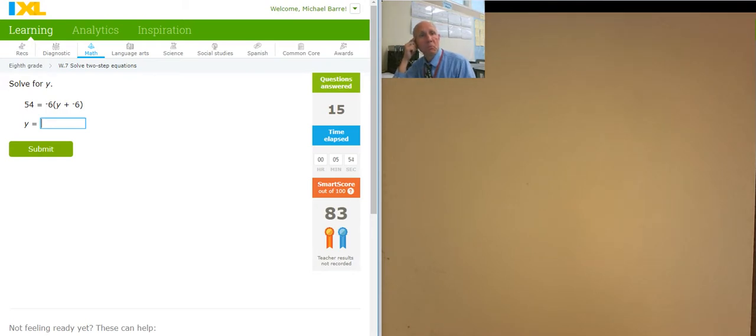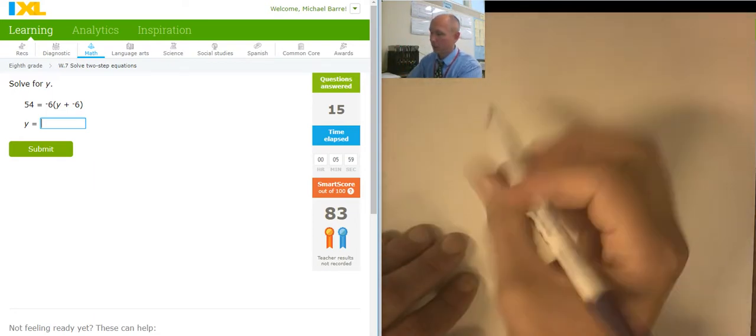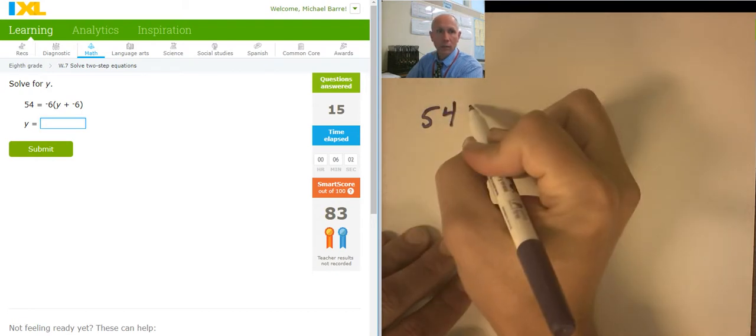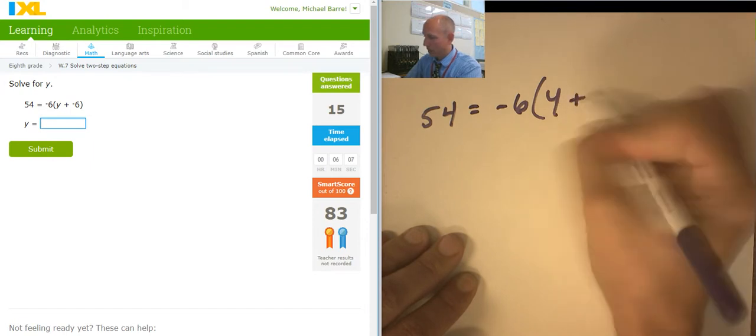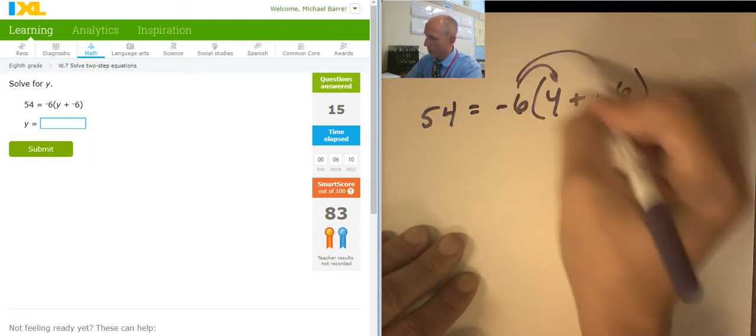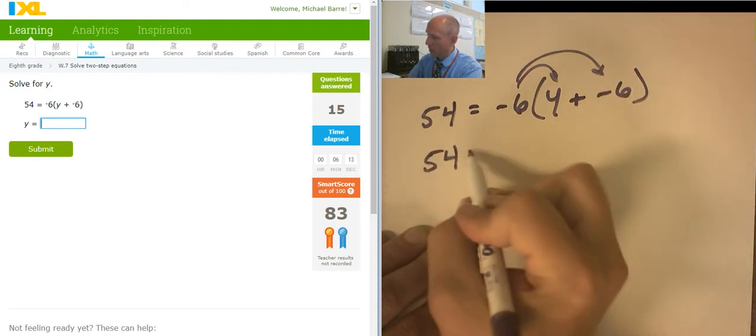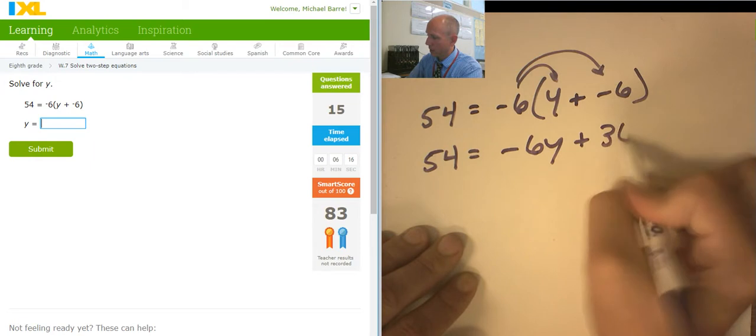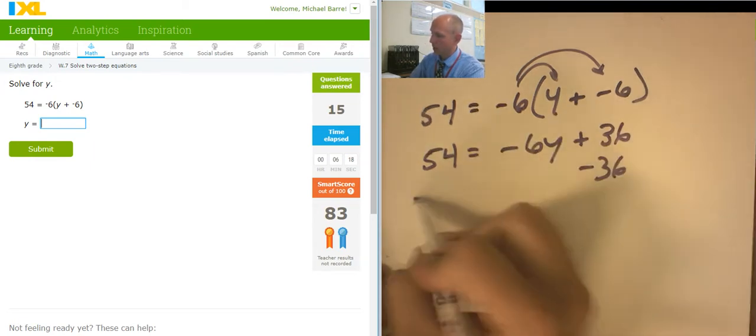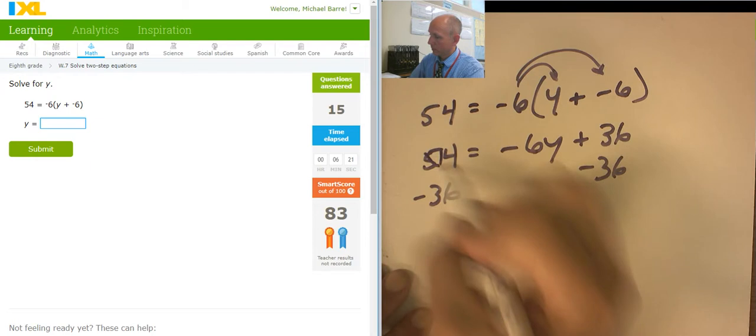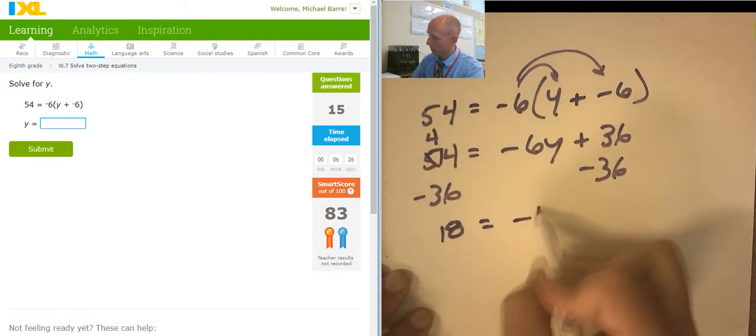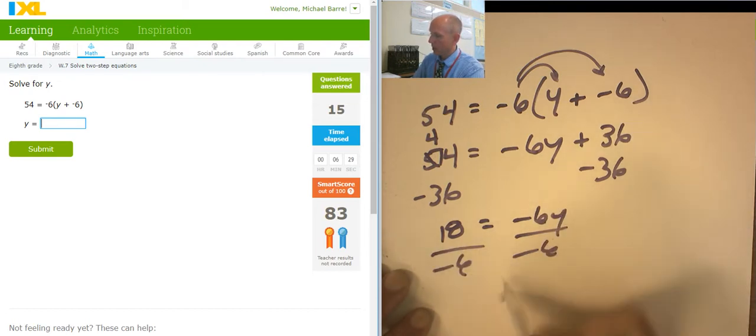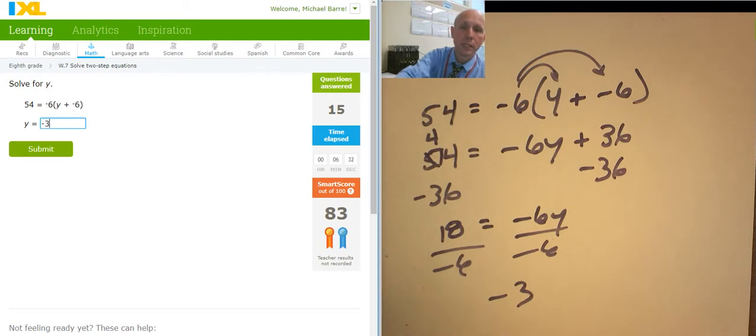I did not expect this one to come up. Okay. Let's do it though. Some distribution here. So 54 equals negative 6 times y plus negative 6. Okay. So I'm going to distribute this. So I have 54 equals negative 6y plus 36. Subtracting 36 from both sides. Dividing both sides by negative 6. That's going to take me to a negative 3. Did not see that one coming.